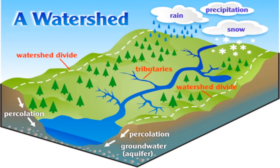Here is an image of a watershed. The area of land draining into any water body is known as watershed area. The whole area of land is called watershed area, and the boundary line is called a watershed divide.